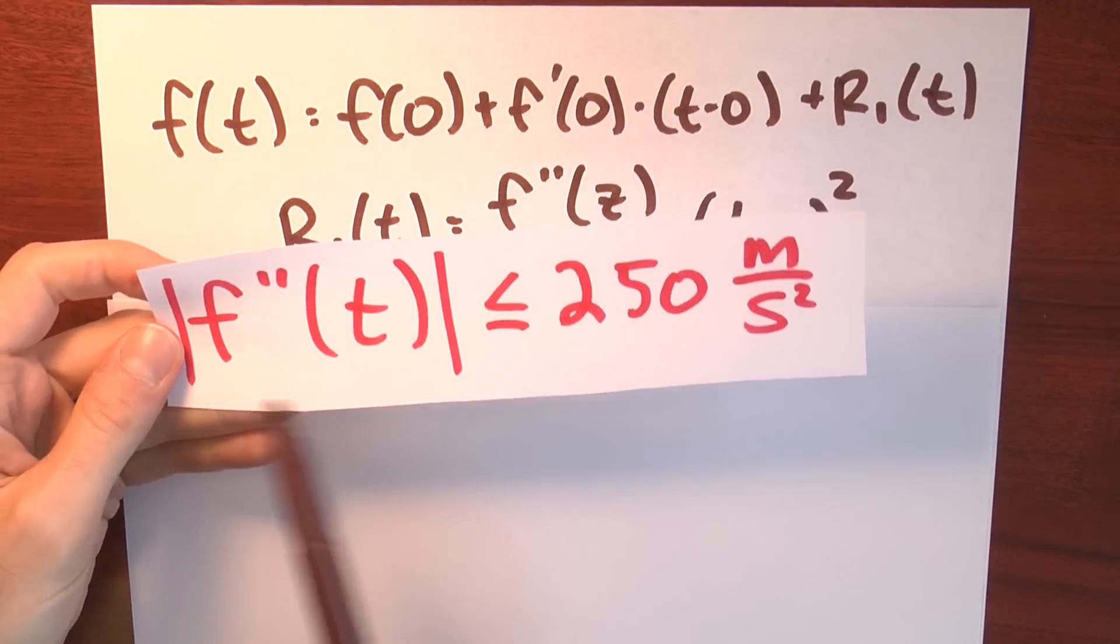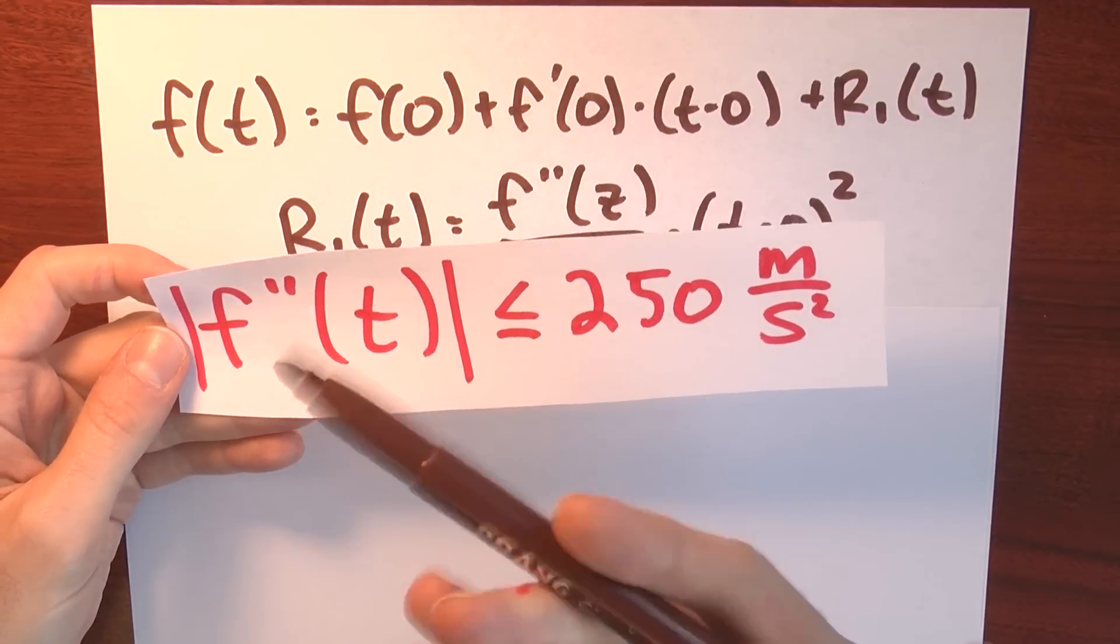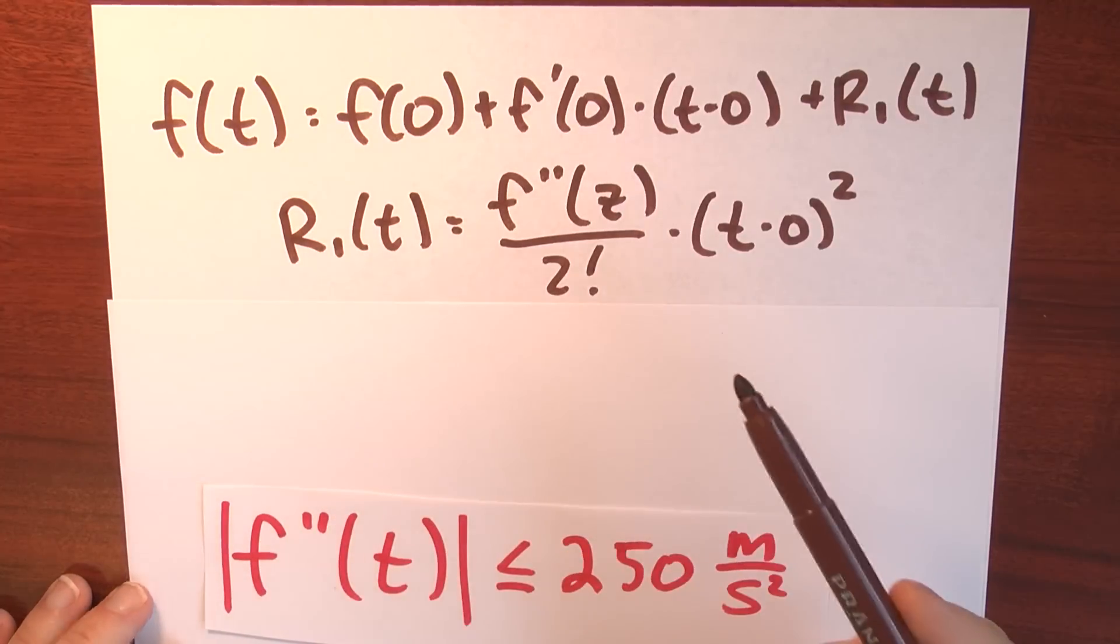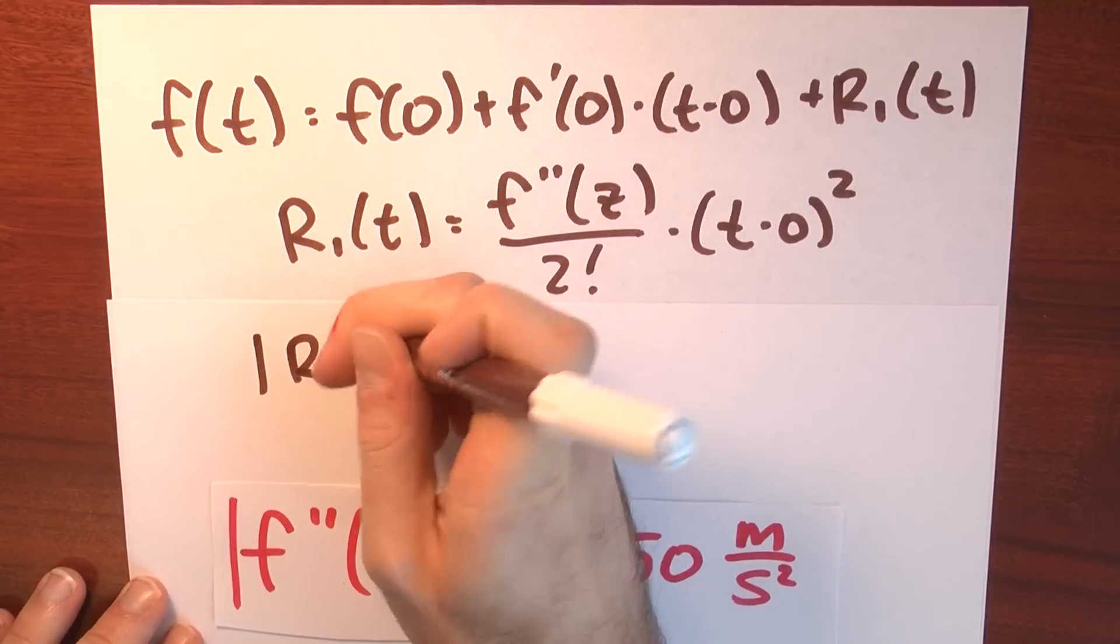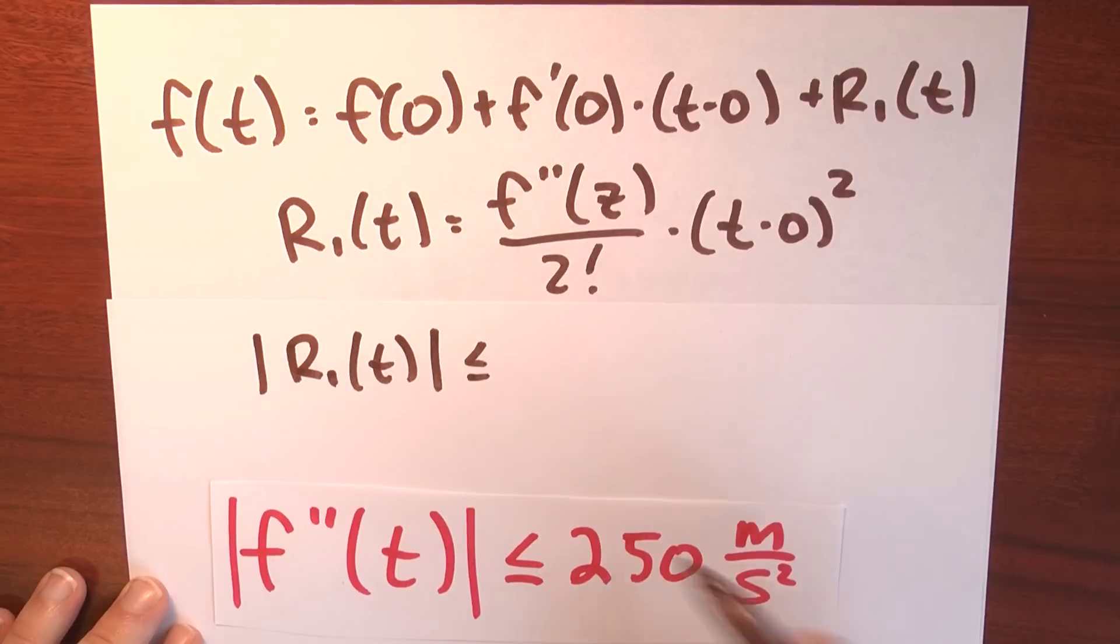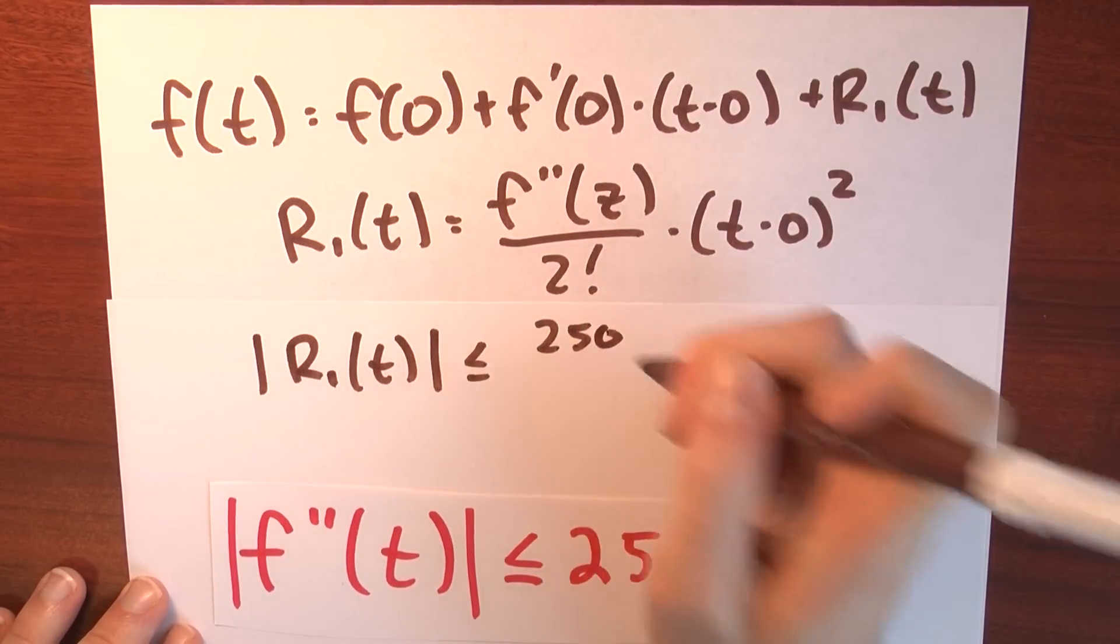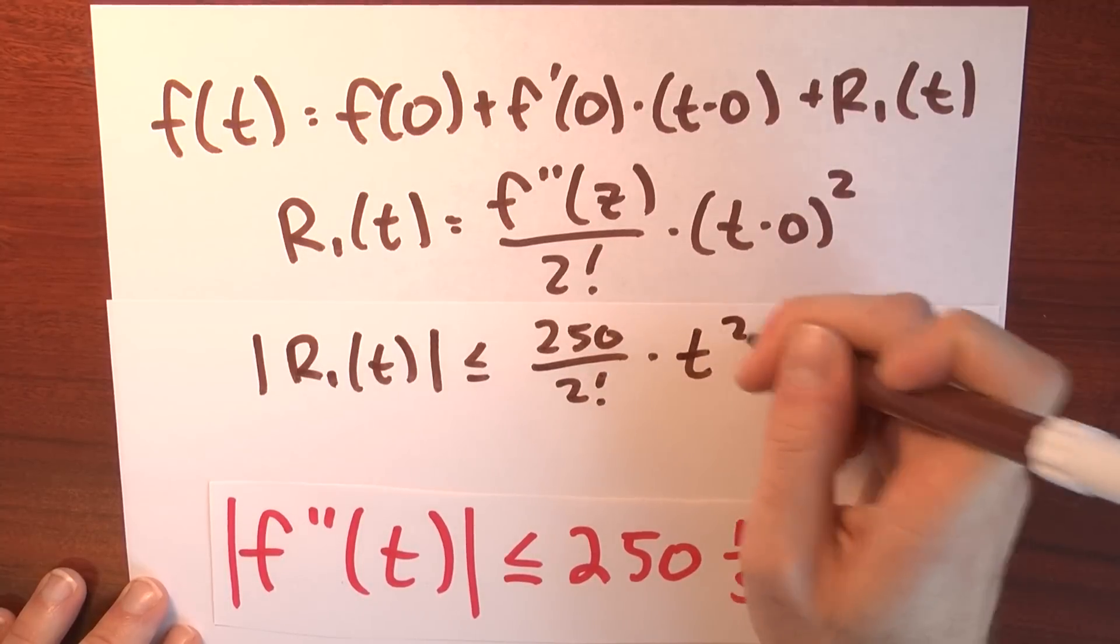Because I don't want to be injured during this trip. I don't want to be accelerating more than about 25 g's. I can now control something about r sub 1, right? I know something about how big r sub 1 is. The absolute value of r sub 1 of t is less than or equal to how big can the second derivative be at any point, 250 divided by 2 factorial times t squared.